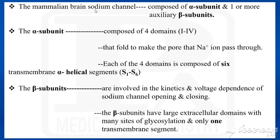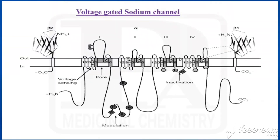The mammalian brain sodium channel has two subunits: one alpha subunit and one or more beta subunits. Looking at the picture, the sodium channel has one alpha subunit and two beta subunits — that is, beta 1 and beta 2.